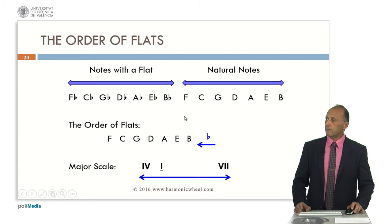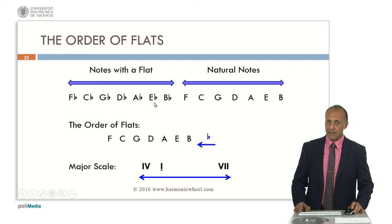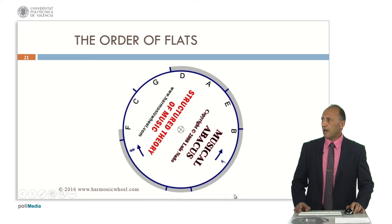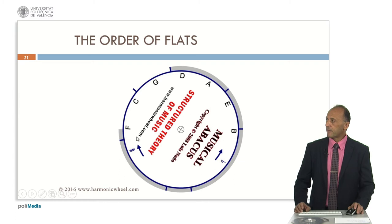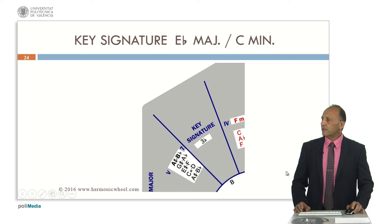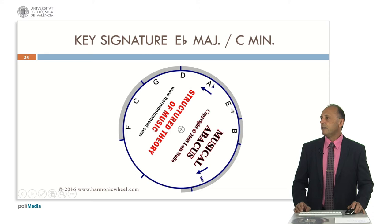For example, if we have a key with three flats, that is until A-flat, it means that the last but one note — that is E-flat — is the tonic. So this is the E-flat major scale. If we consider a key with seven flats, it means that the tonic is the last but one note, that is C-flat, so C-flat major scale. At the center area of the musical abacus, we can find the order of flats: B, E, A, D, G, C, F. Here we can see the E-flat major scale as well as its relative minor, C minor. They contain three flats in the key signature, which are B, E, A.